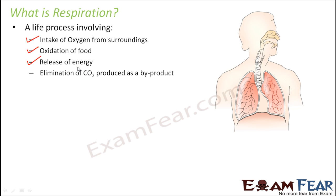It is not only about performing activity. Even the processes which are taking place inside our body — for example, digestion, reproduction, excretion — the cells perform all these processes. So cells also need energy to do all these things. Not only is energy released during the oxidation of food, but carbon dioxide is also one of the byproducts. This carbon dioxide also needs to be eliminated out of the body. So respiration involves taking in oxygen, giving out carbon dioxide, oxidizing the food, and releasing a lot of energy.